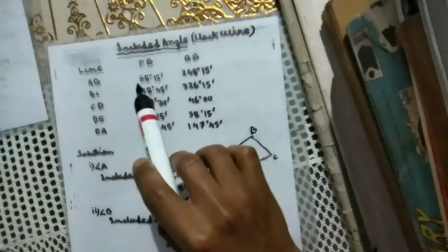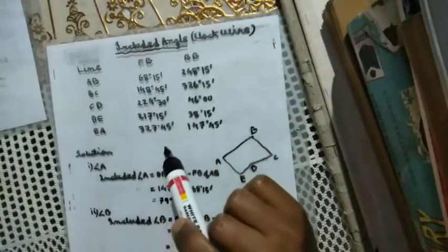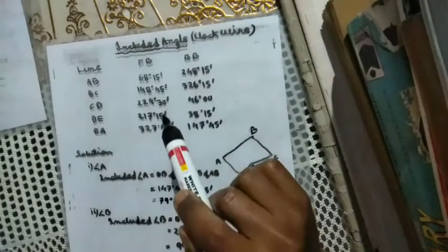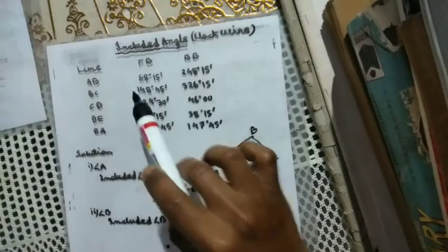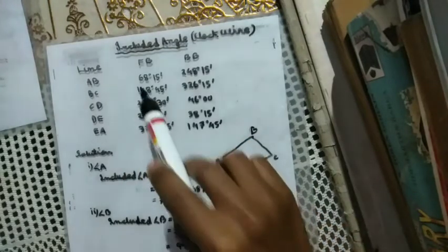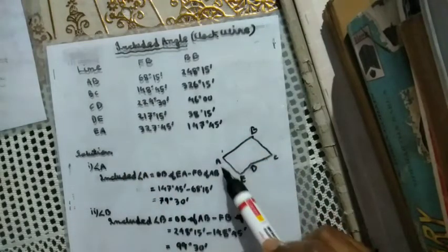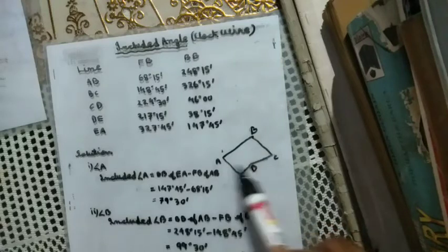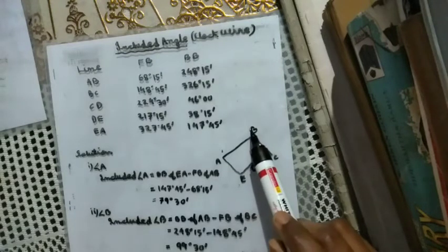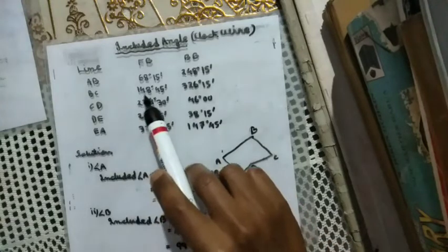This is AB line. We have to do 68 degrees. First quadrant is 68. Then BC, BC is 148.